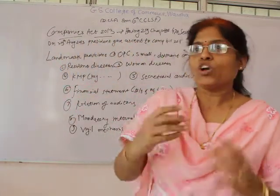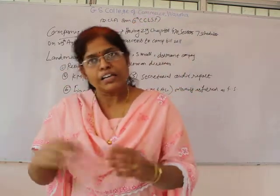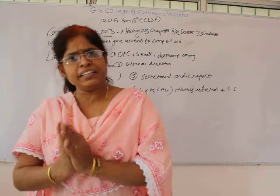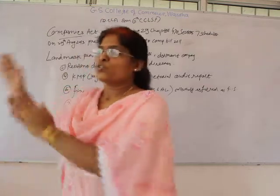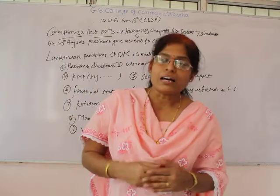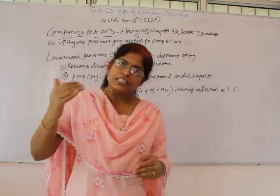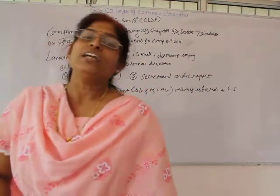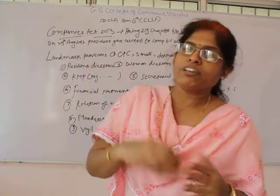How did the Companies Act 2013 come into existence? What are the compulsory steps for converting the company bill into the Companies Act? First of all, it is mandatory that the bill must be passed from both houses of Parliament — Lok Sabha and Rajya Sabha. The company bill was passed in Rajya Sabha on 8th August 2013, and in Lok Sabha on 18th December 2012. The final consent must be given by the President.